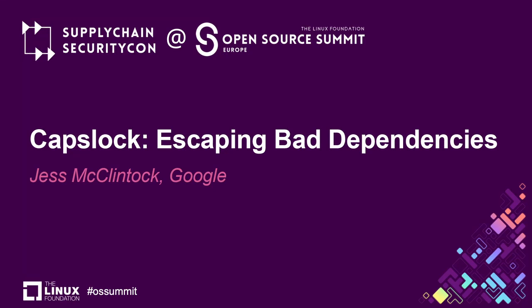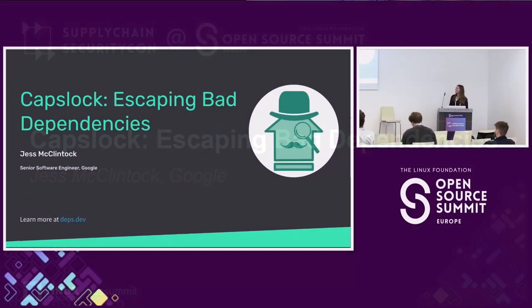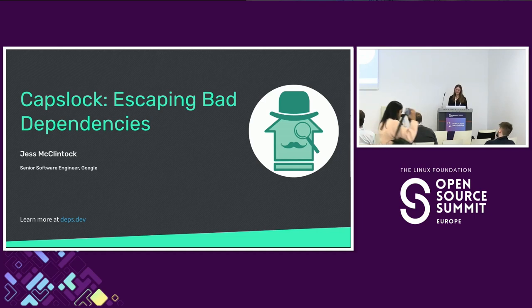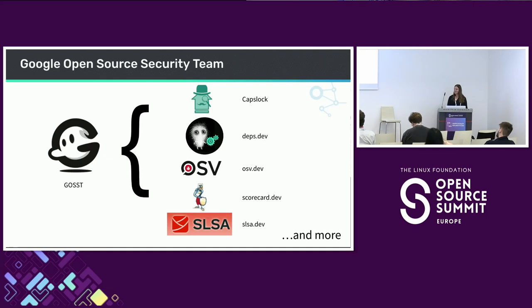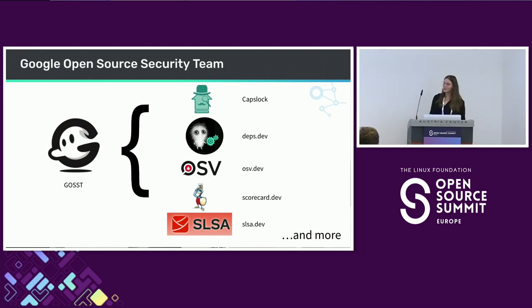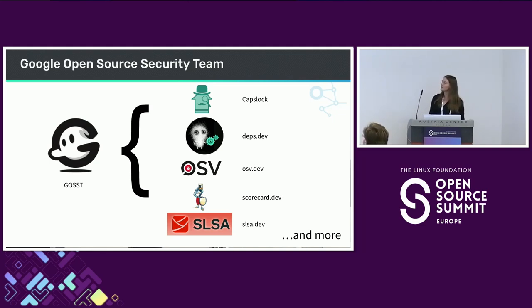Hi everyone, I'm Jess McClintock. I'm a senior software engineer at Google and I'm here to talk about Caps Lock and how you can use it to make informed decisions about which dependencies you're using. I work on Google's open source security team, also called GOSST, and we support and maintain several different projects. The ones I'm here to talk about today are Caps Lock and Deps.dev.